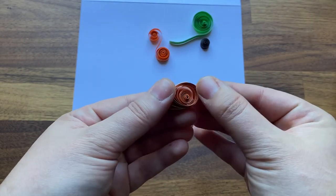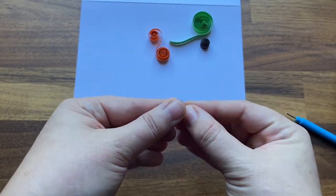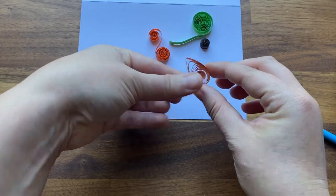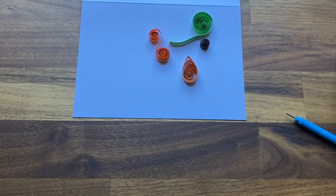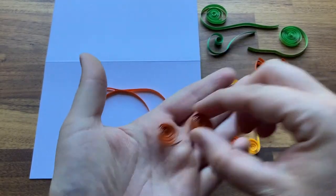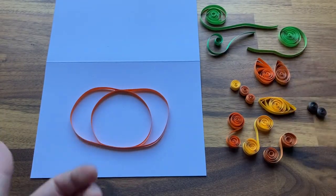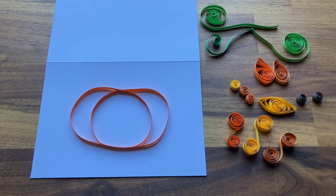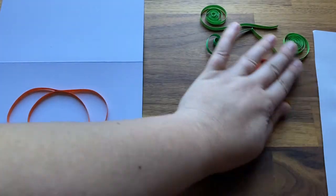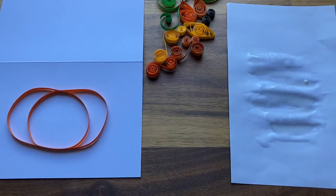When you're ready, glue the end to secure the shape in place. Now that I've created a variety of quilt shapes, I'm ready to set them into my pumpkin outline. Once again, pour a layer of glue onto your scrap paper, and then dip each shape into the glue and onto the cardstock.